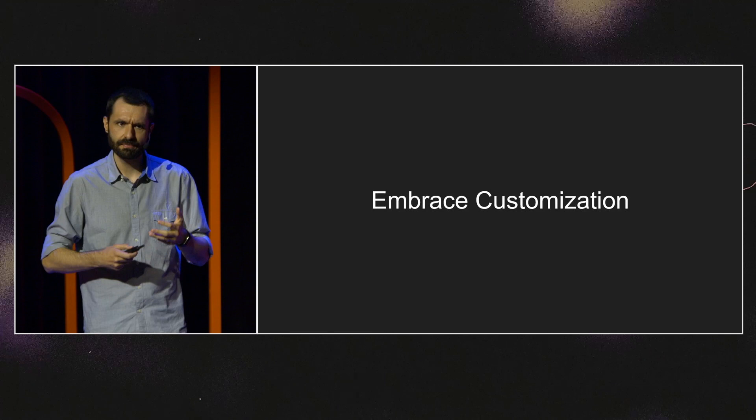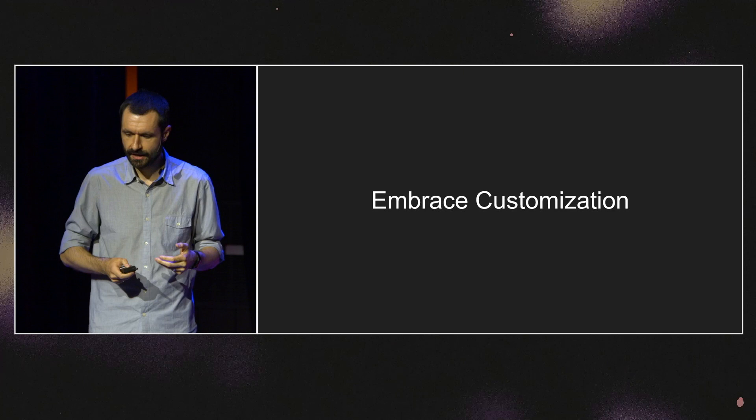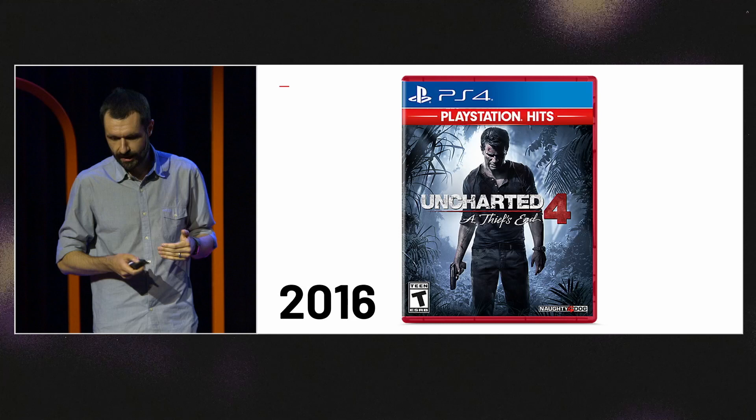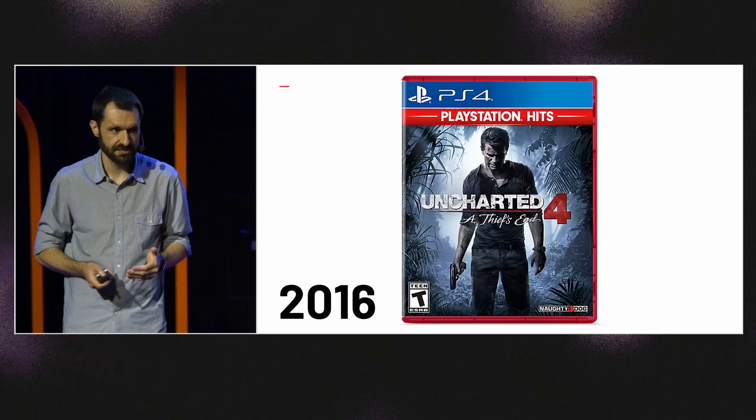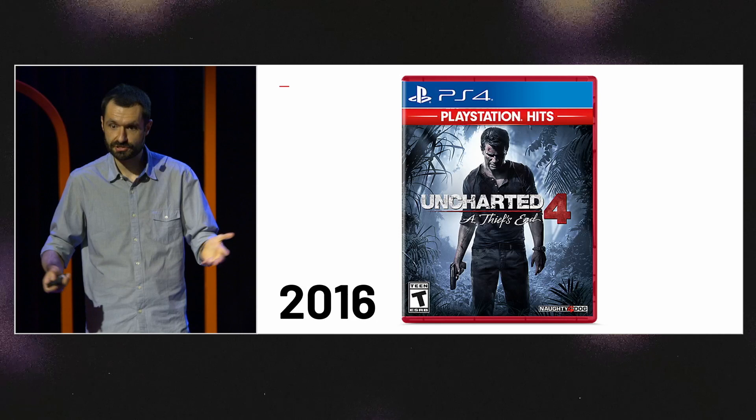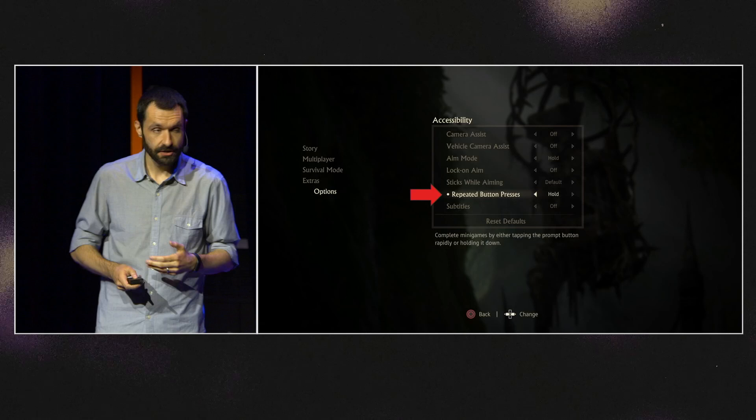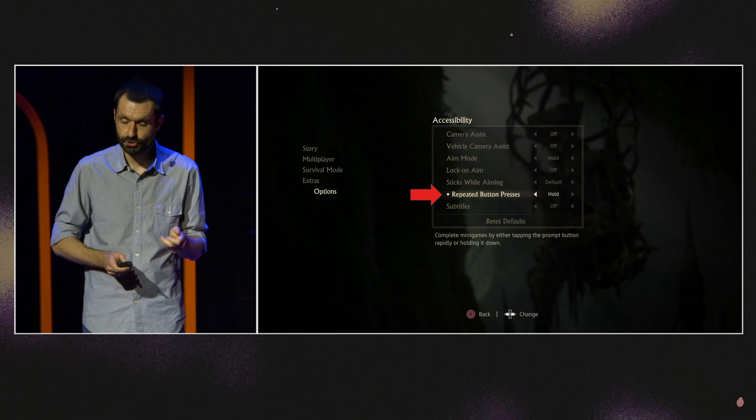Thinking this way — what is the result on an actual product? Our first game with an accessibility menu built in was Uncharted 4, released in 2016. Credit to Alex Nee and Amelia Schatz, who pushed this forward at the studio and really leveled up our game in terms of accessibility. Uncharted 4 had a one-page accessibility menu.